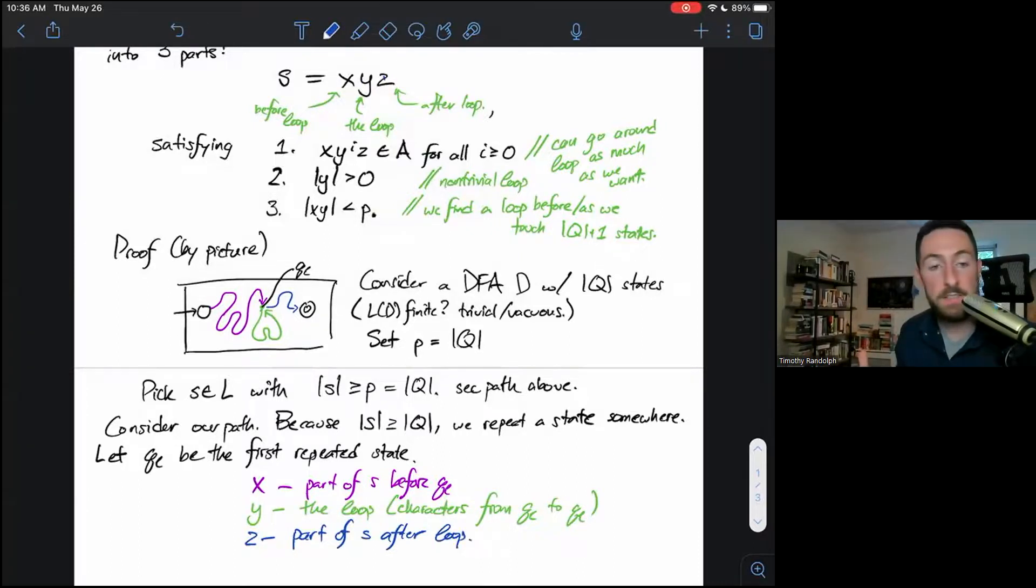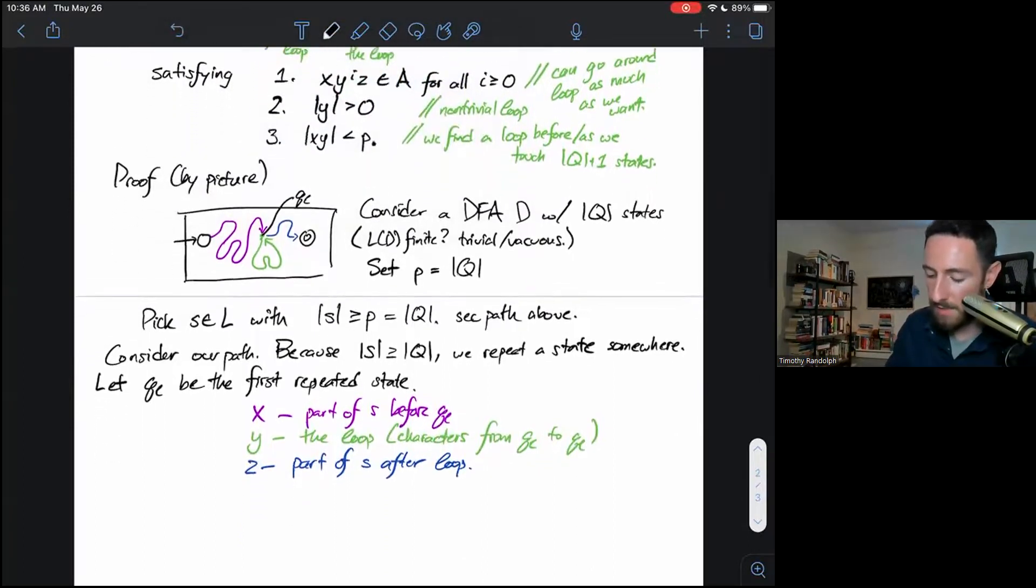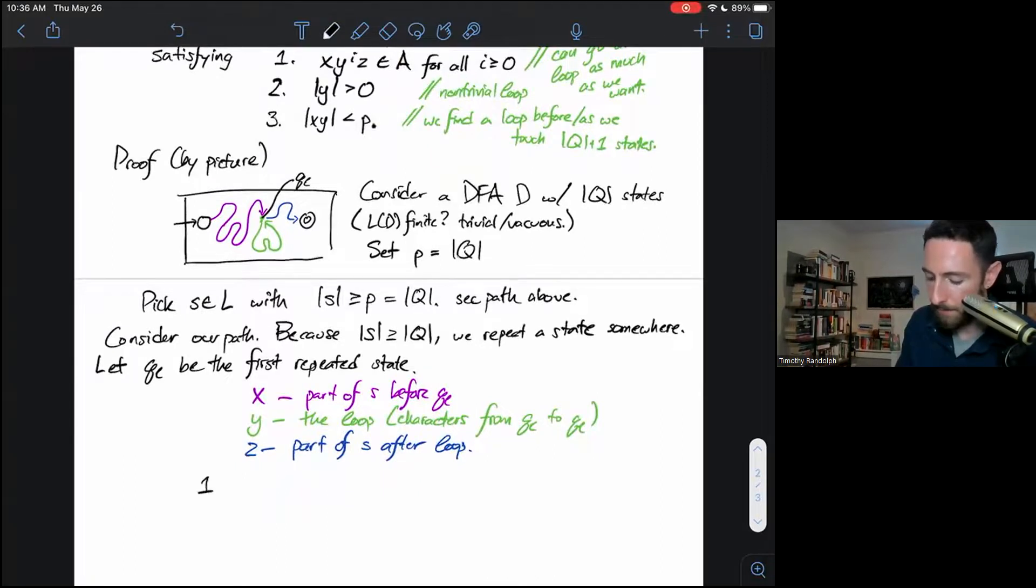And note that just by defining these things, I haven't necessarily said that they're not the empty string. So maybe the first state I see twice is the start state. In that case, X would be the empty string. That's totally fine. And now I'm going to argue that we meet each of these three conditions. So now I claim X, Y to the I, Z is in the language for I greater than or equal to zero. And to see this, we can look at our picture and say, well, X, Z is in our language because X will take us to QL, and Z will take us to the end state from QL. Moreover, I can go around my loop as many times as I want. Every time I insert that little sub string, it'll take me from QL around the loop to QL, because we've got determinism going on.